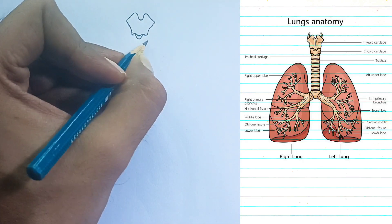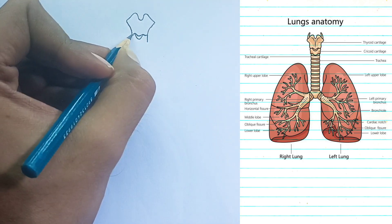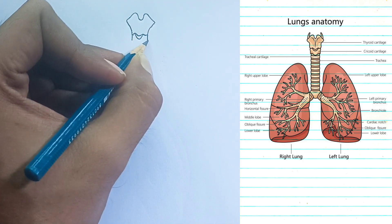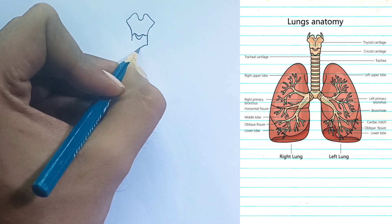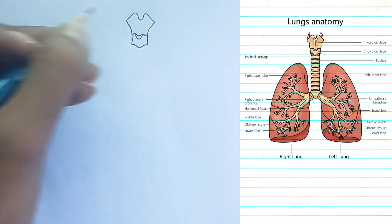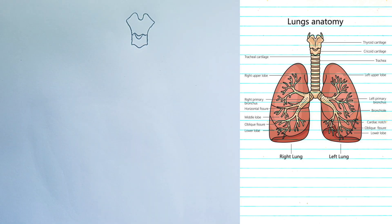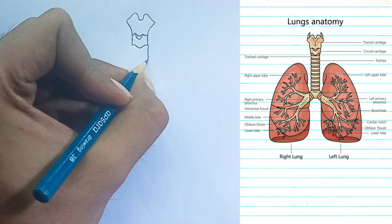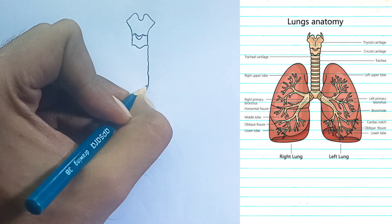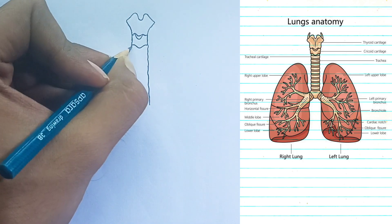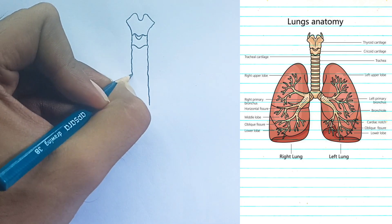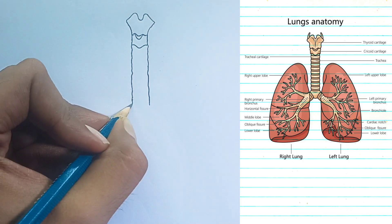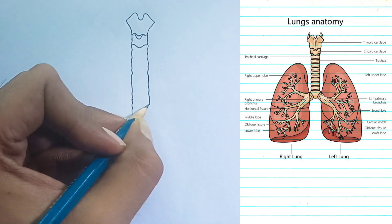Trachea, or windpipe: a cartilaginous tube extending from the larynx that carries air to and from the lungs. Tracheal cartilage: these are the C-shaped rings of cartilage that provide structural support to the trachea, preventing it from collapsing.